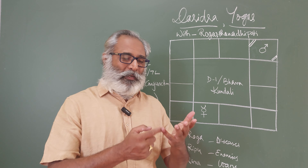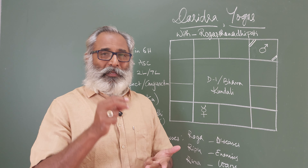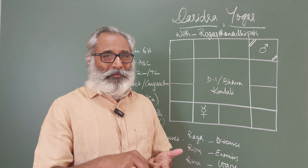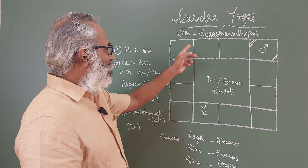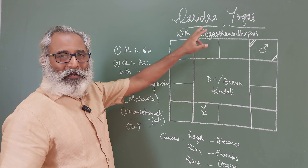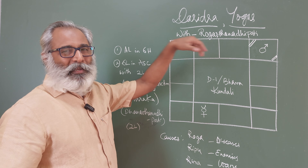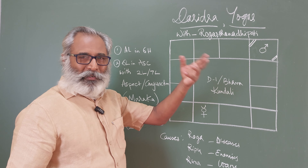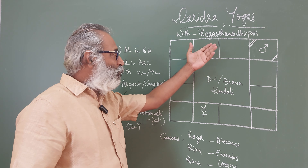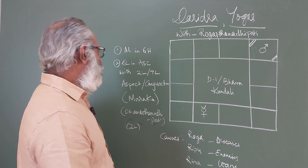The first one was involving the 12th Lord, the Ascendant, and the Marakesh — that is the second and the seventh Lord. Today, the Dharidra Yoga involves the Rogasthana Adipati. The sixth Lord can be called Ripasthana Adipati or Rinasthana Adipati, but Rogasthana Adipati because it gives a lot of diseases — that's why it is more prevalent to call it as Rogasthana Adipati.